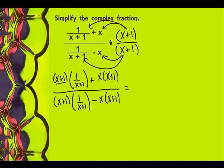Well, up here I could write that over 1, and what happens is these will cancel to leave me with a 1. Now I'm going to distribute my x through, so I'm going to have plus x squared plus x.